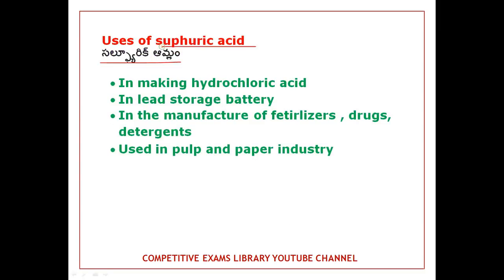Next, sulfuric acid. Sulfuric acid is used for making HCl, hydrochloric acid. The lead storage battery uses sulfuric acid. It is also used in the manufacture of fertilizers, drugs, and detergents.